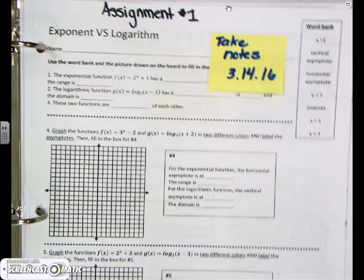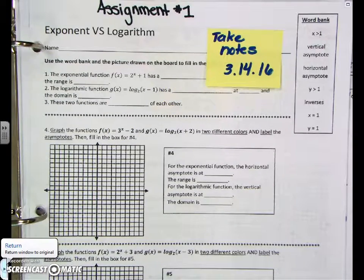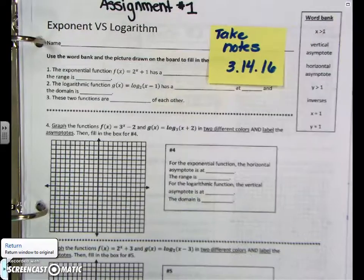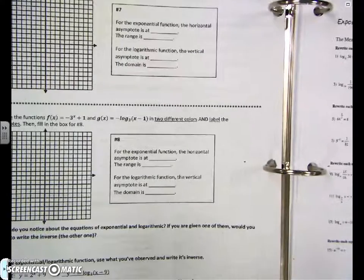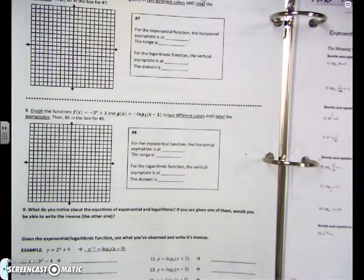looks like this. We took notes in class, pretty much finished all of it in class. I think some classes didn't finish the back part, which was to find the inverse. So front and back, that's what you owe me for assignment number one.